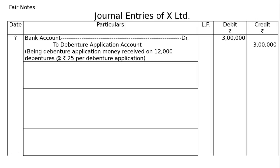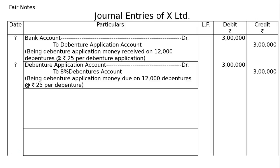Next entry: Debenture Application Account debited ₹3,00,000 to 8% Debentures Account ₹3,00,000 — being debenture application money transferred on 12,000 debentures at the rate of ₹25 per debenture.